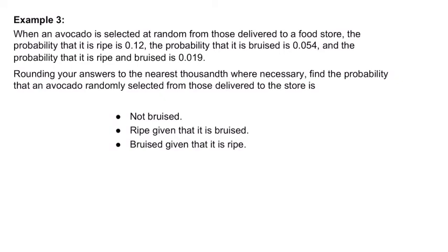We've got an example here about an avocado. When an avocado is selected at random from those delivered to a food store, the probability that it's ripe is 12 percent, bruised is about 5 percent, and ripe and bruised is a little bit over 1 percent, really close to 2 percent.